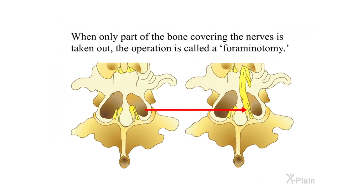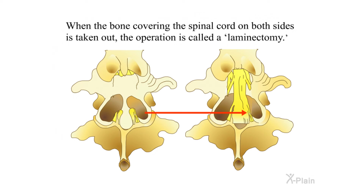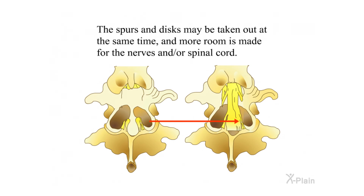When only part of the bone covering the nerves is taken out, the operation is called a foraminotomy. When the bone covering the spinal cord on both sides is taken out, the operation is called a laminectomy. The spurs and discs may be taken out at the same time, making more room for the nerves and/or spinal cord.